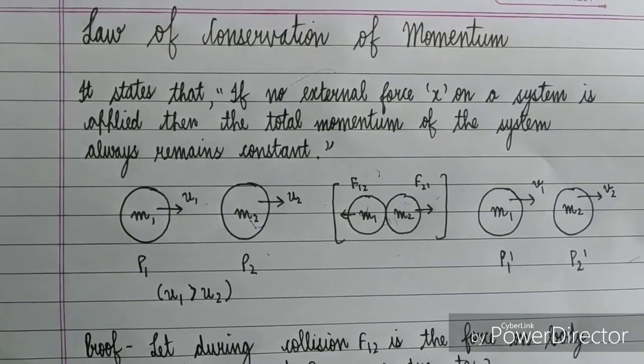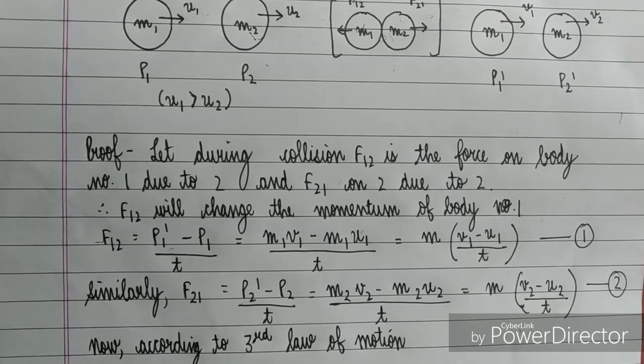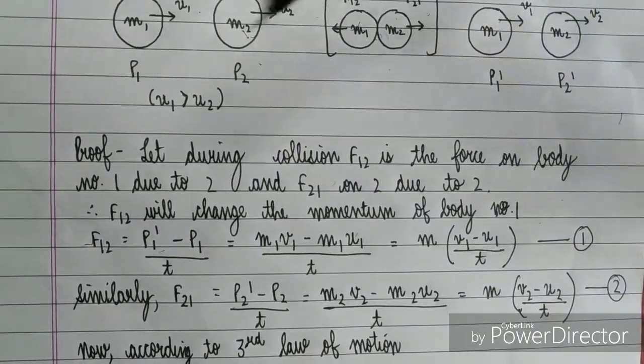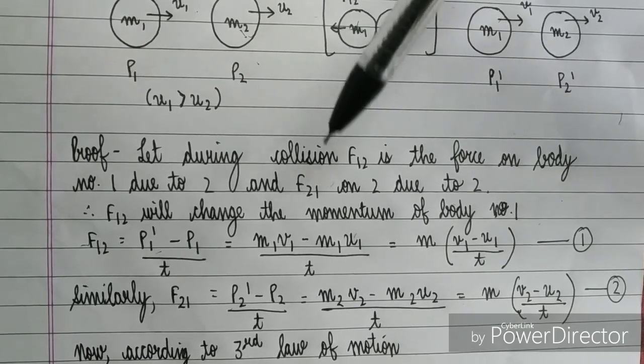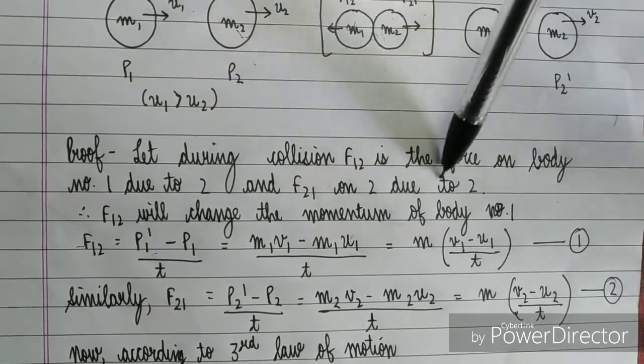So now let's look at the proof. Law of Conservation of Momentum, let's look at its derivation. So first of all, we will write this. Let during collision, F12 is the force on body number 1 due to 2, and F21 on 2 due to 1.